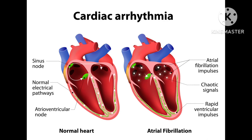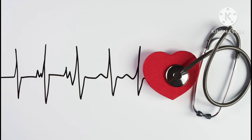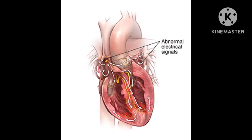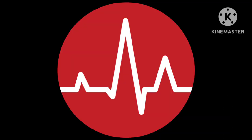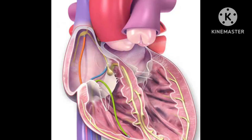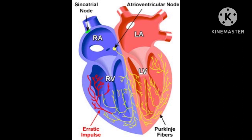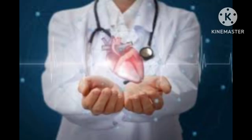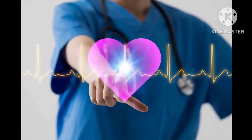Vagal maneuvers are another arrhythmia treatment. These simple exercises can sometimes stop or slow down certain types of supraventricular arrhythmias by affecting the vagus nerve, which helps control heart rate. Vagal maneuvers include gagging, holding your breath and bearing down, the Valsalva maneuver, immersing the face in ice-cold water, coughing, and putting fingers on the eyelids and pressing down gently.